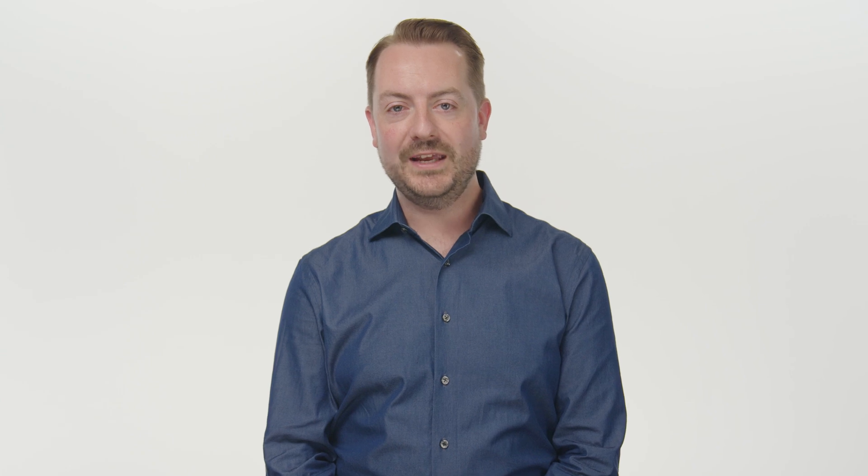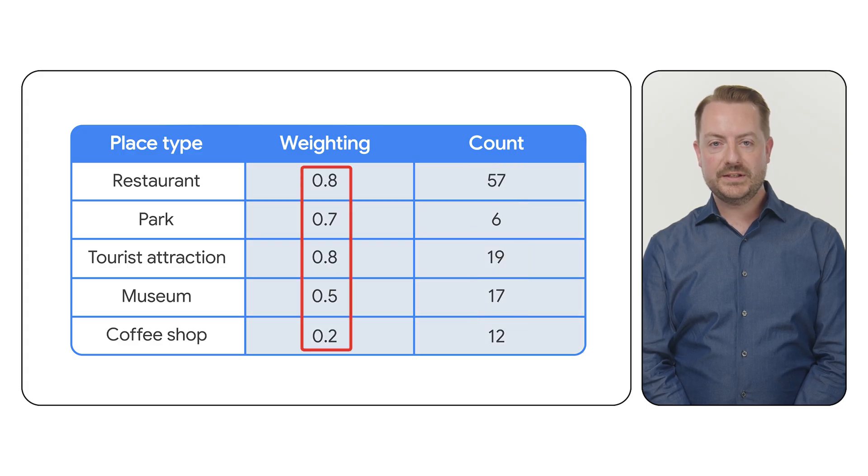Check the docs for other location filters, like searching within a specific geographic region like a zip code or city, or even a custom polygon. After making these calls for all your types and locations, you'll have the raw counts you need. Now that we have the counts for each place type and their assigned weights, how do we turn this into a score?